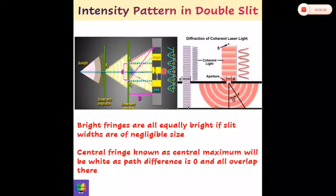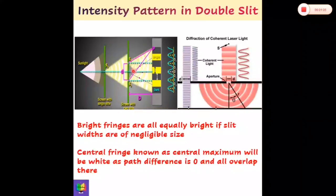The central fringe, known as central maxima, will be white as the path difference is zero and all wavelengths overlap there. The path difference d sin θ equals nλ for constructive interference and (n + ½)λ for destructive interference. If θ is zero, sin 0 is zero, so all wavelengths overlap in the middle and we get a central maximum fringe which is white because all wavelengths merge together.